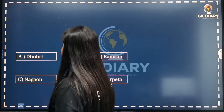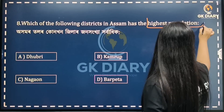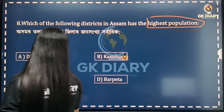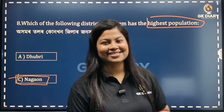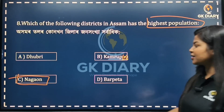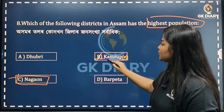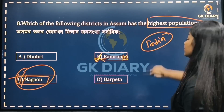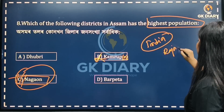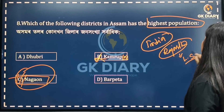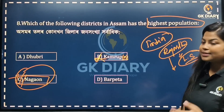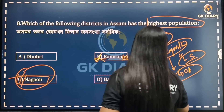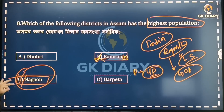Next question: How do we do the census? The highest population and population-related data from the census — the correct option is noted.